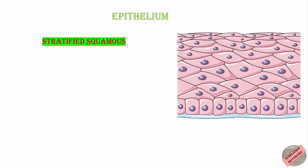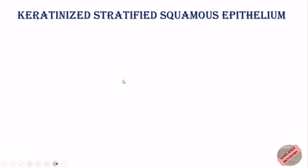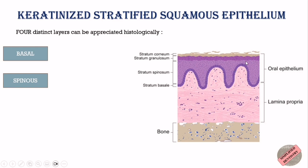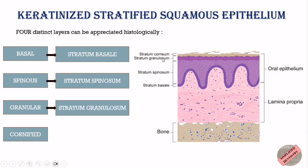The epithelium of the oral mucosa is of stratified squamous type and it may be keratinized or non-keratinized. When keratinized, it may be either orthokeratinized or parakeratinized. In the keratinized oral mucosa, the epithelium consists of four layers: the lowermost is the basal layer, above that is the spinous or prickle cell layer, then the granular cell layer, and the topmost is the corneal or keratin layer. In Latin, these are referred to as stratum basale, stratum spinosum, stratum granulosum, and stratum corneum respectively.